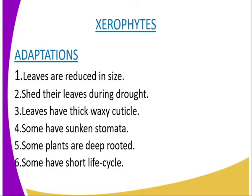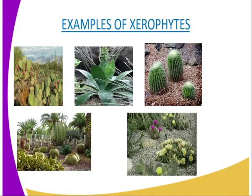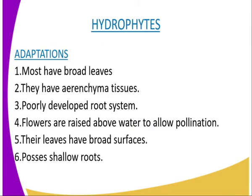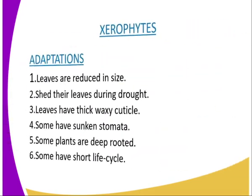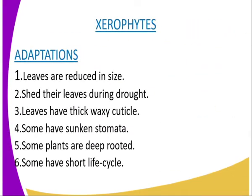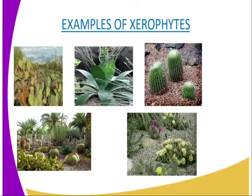Because of those conditions, xerophytes have developed mechanisms of surviving. The adaptations include: first, leaves are reduced in size, such as the scale-like leaves of the whistling pine, as shown in the diagram. Second, shedding of leaves during drought to reduce the surface exposed to transpiration. Third, leaves have a thick wax cuticle to minimize the rate of cuticular transpiration, as you can see.